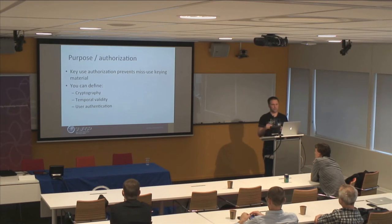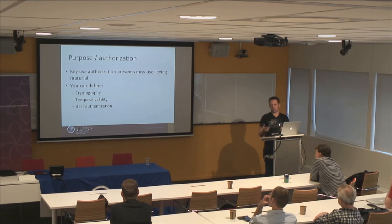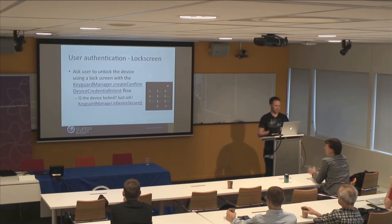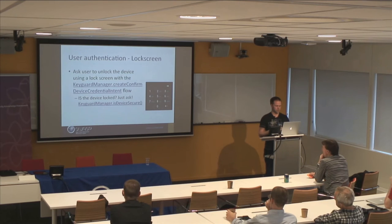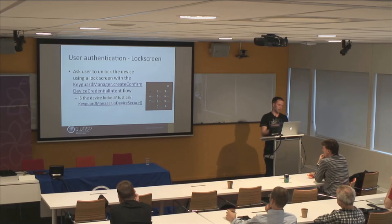You can define the cryptography — for instance, you can restrict it to encryption or decryption, define what block mode it supports, tell it whether it should sign or verify. You can also define temporal validity — for how many seconds should this key be usable after the user authenticated for it or after the key was created. And you can define whether the user should authenticate. There are two ways to authenticate: one is by providing a lock screen flow using the KeyguardManager to create a confirmed device credential intent flow. The user gets the lock screen presented and is asked to unlock the device, and with that you can unlock a key.